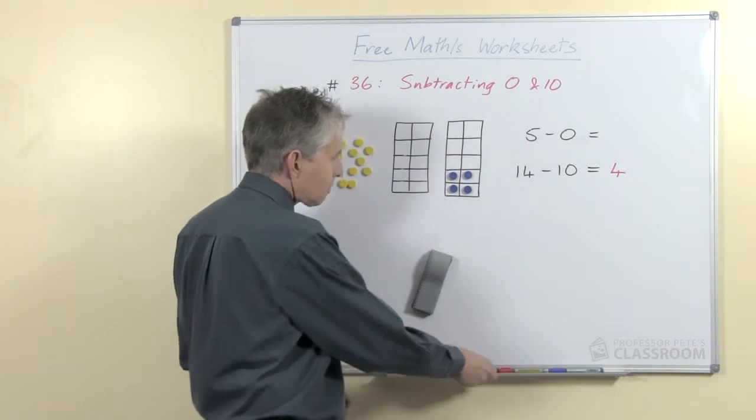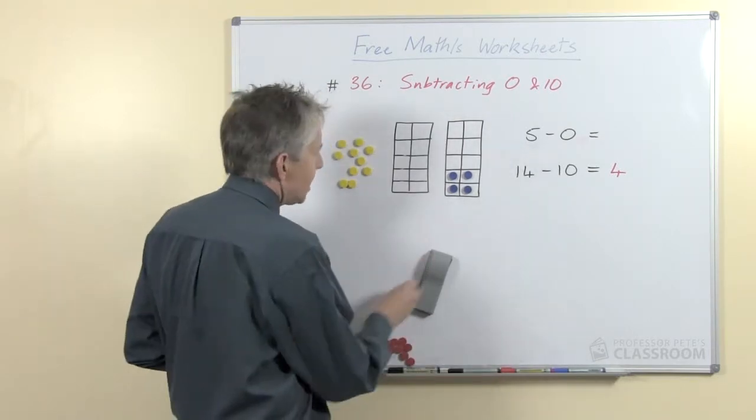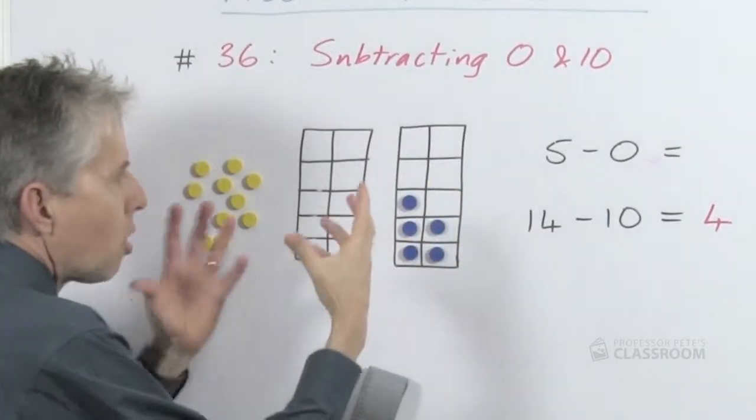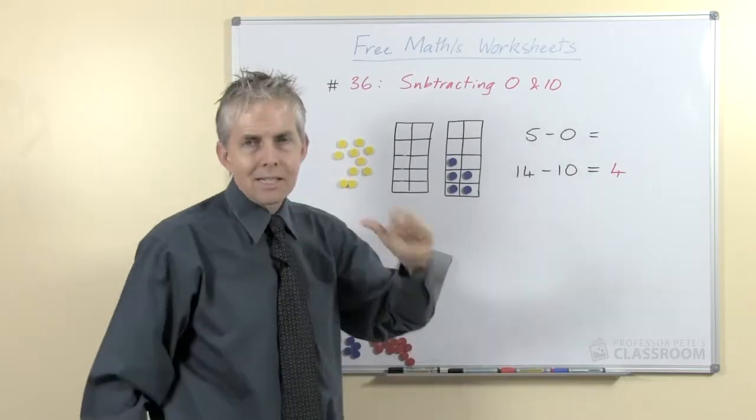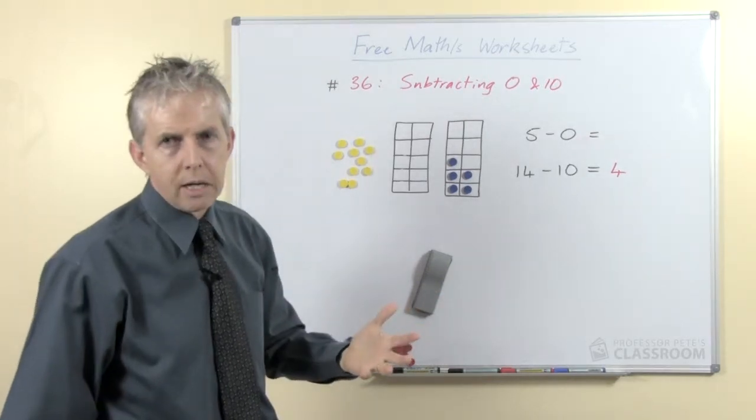So we can use a ten frame to model this operation quite easily. So five take away zero, here's five. It's the taking away zero that's the tricky part.